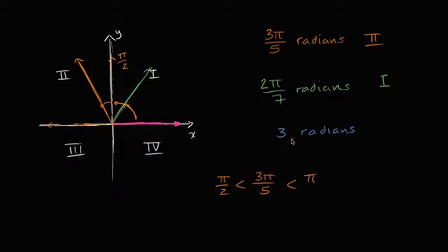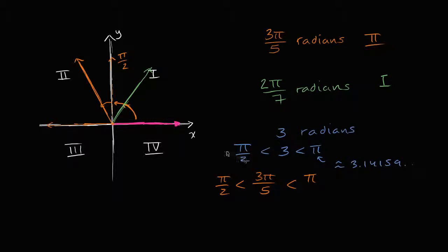What about three radians? Pi is approximately 3.14159, so three is a little bit less than pi, but it's greater than pi over two — since three is much closer to 3.14 than to half of that. So three radians is between pi over two and pi. Starting with the magenta ray and rotating counterclockwise by three radians, we're going to end up somewhere like this — which puts us, once again, in the second quadrant.